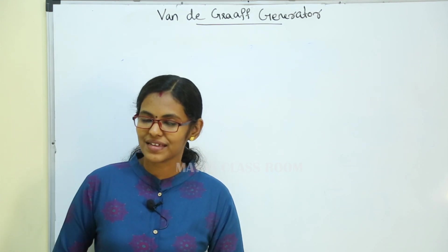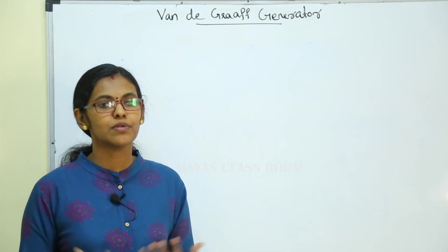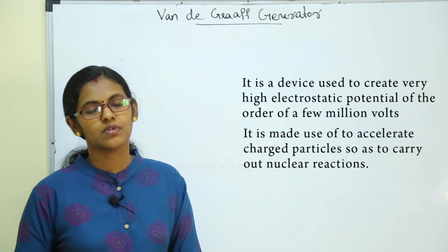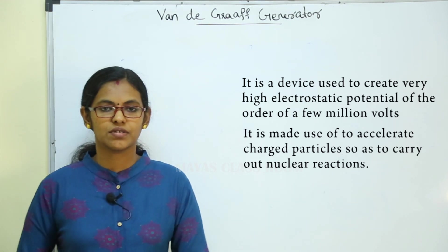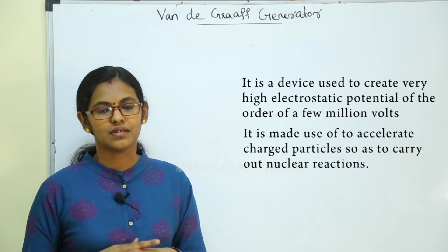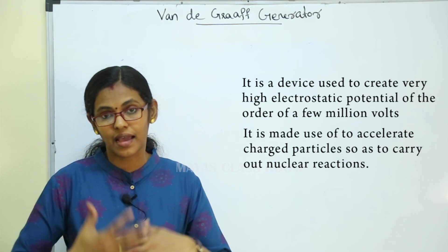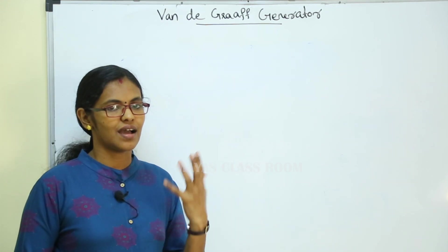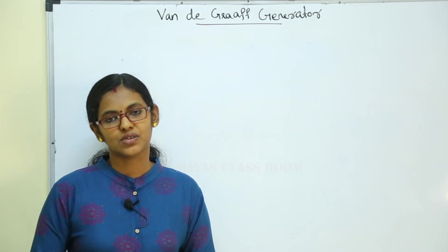The Van de Graaff generator is an electrostatic generator that is capable of producing a large potential — almost 5 to 10 million volts. It is used to accelerate charged particles to carry out nuclear reactions, providing high energy and high potential.